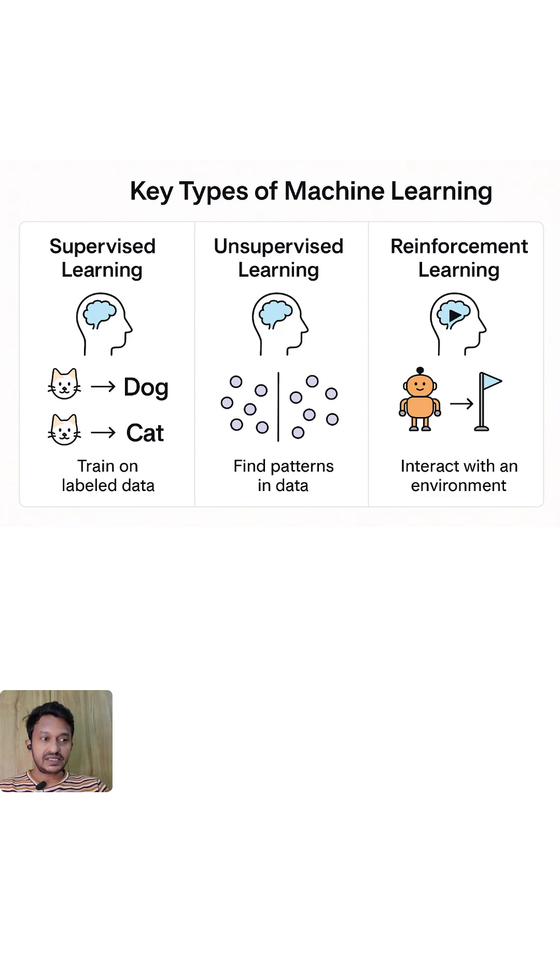So supervised learning is where the machines learn from labeled examples here, like predict house prices from past data. So every data is labeled, like we saw in the cat example. So there is an image of the cat and there is a tag or the label named cat.